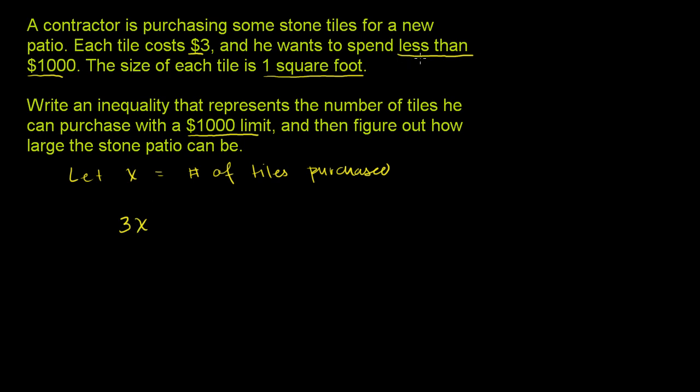And he wants to spend less than $1,000. 3x is how much he spends if he buys x tiles. It has to be less than $1,000. If it was less than or equal to, we'd have an equal sign there.